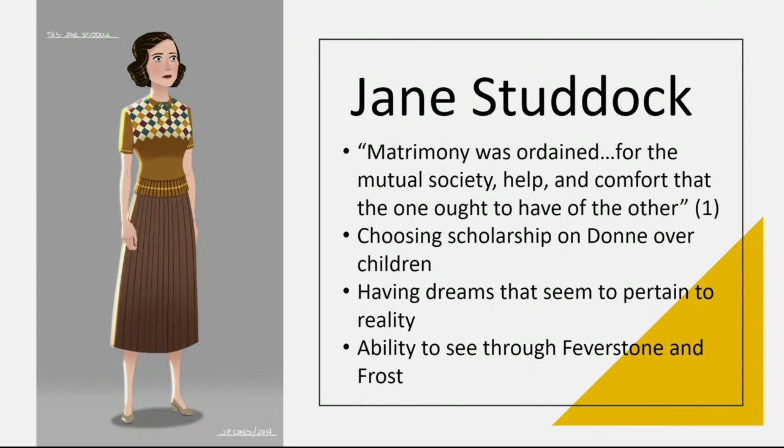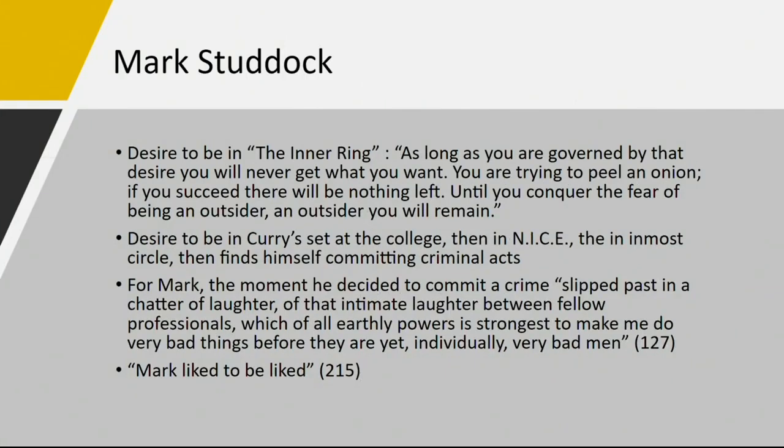Jane begins the novel having dreams that seem to pertain to reality. She becomes what is known later in the book as a seer, able to see through the corrupt characters—Feverstone, whom she says has a mouth like a shark, and Frost, who makes her so uncomfortable at a distance that she runs the other direction. In contrast to Jane's ability to see is Mark's blindness.